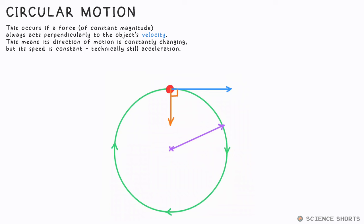As velocity is a vector, it's still accelerating because the direction of the velocity is changing, even though the magnitude of the velocity, the speed, is not.